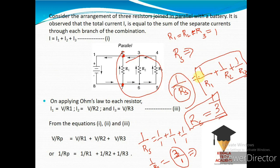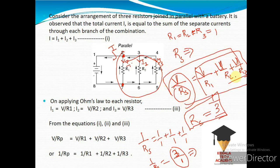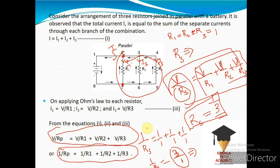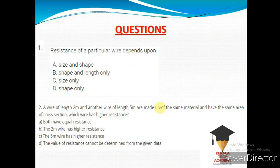In a parallel circuit, the total current I splits into branch currents i1, i2, and i3. The total current I equals V/Rs, and each branch current is: i1 equals V/R1, i2 equals V/R2, i3 equals V/R3. This completes the parallel resistance example.